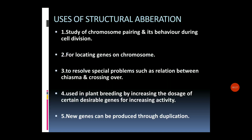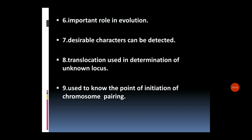So what are the uses of structural chromosomal aberration? First, it can be used to study chromosome pairing and chromosome behavior during cell division. Second, it can be used for locating genes on chromosomes. It can also be used to resolve special problems such as the relation between chiasma and crossing over. It can be used in plant breeding by increasing the dosage of certain desirable genes for increasing activity, and new genes can be produced through duplication.